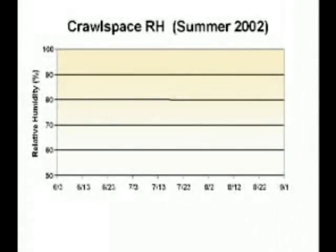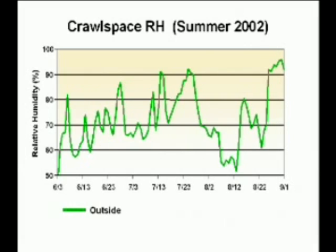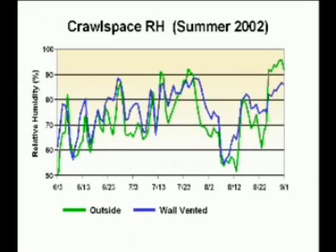We can use this graph to compare relative humidity conditions for the summer of 2002. The first line drawn on the graph is the outdoor conditions. Since this test site is in the hot and humid climate area of eastern North Carolina, it's not at all surprising to see that outdoor humidity levels stayed high most of the summer. Now let's display what happened in the control group of wall-vented crawlspaces. Notice how closely the crawlspace moisture levels follow the outdoor conditions. These crawlspaces stayed damp, with relative humidity levels above 70% most of the humid summer.